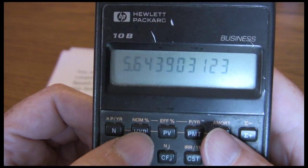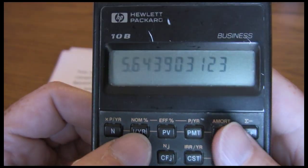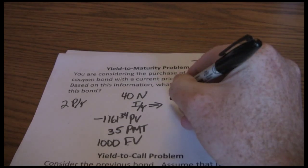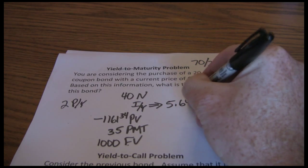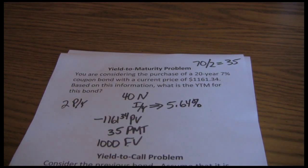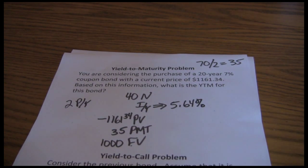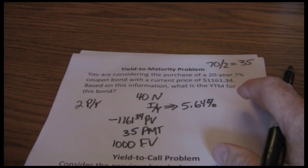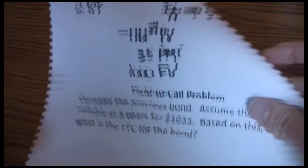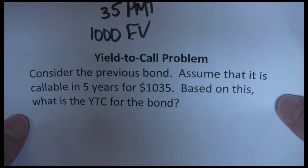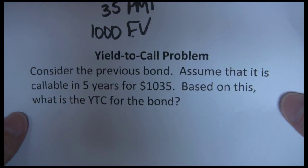My yield to maturity on this bond is 5.64%. That tells me if I buy this bond today and hold it until maturity, I should expect to earn a rate of return of 5.64% per year. Next up, we can look at the yield to call — yield to call is very similar to yield to maturity.